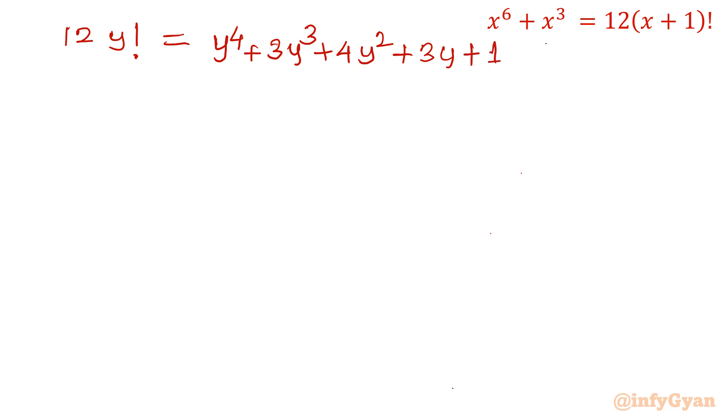What our assumption was: x minus 1 we substituted as y. Now I will apply recursive formula again. So I will write 12 times y times y minus 1 factorial equal to our RHS as it is: y power 4 plus 3y cube plus 4y square plus 3y plus 1.